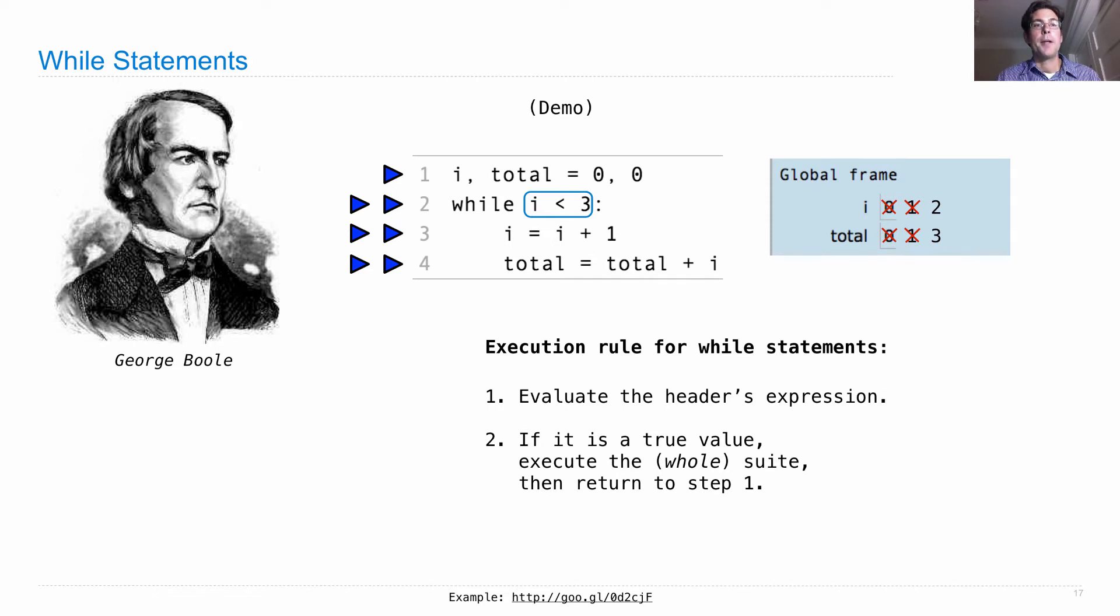And we repeat. We go up to the top. While i is less than 3, is i less than 3? It certainly is because it's 2. Now we're going to rebind i to i plus 1, so now i is 3. Here's the really important part: